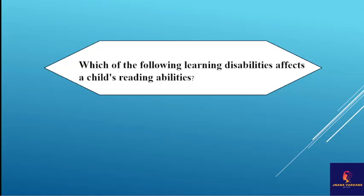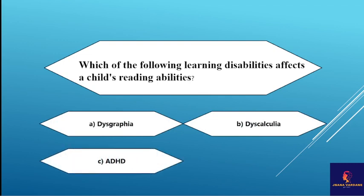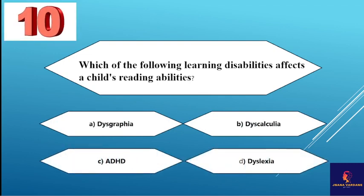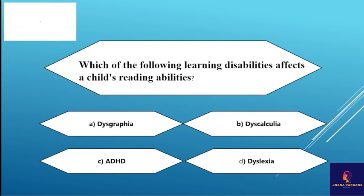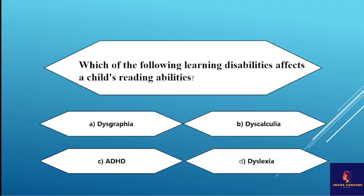First question: which of the following learning disabilities affects a child's reading abilities? Options: dysgraphia, dyscalculia, ADHD, dyslexia. The correct option is dyslexia.